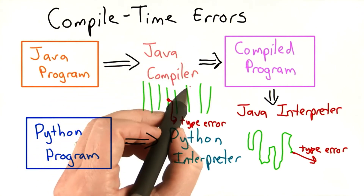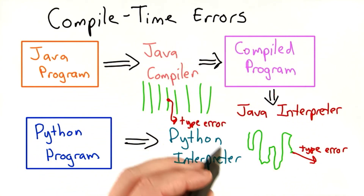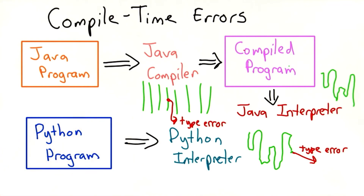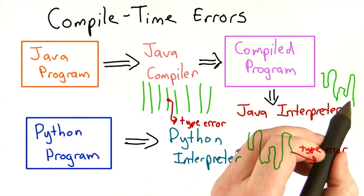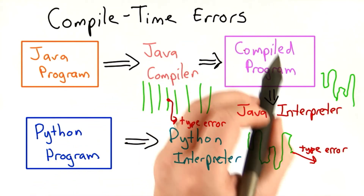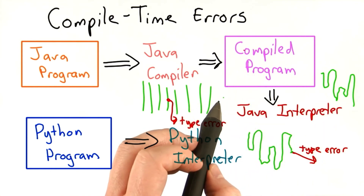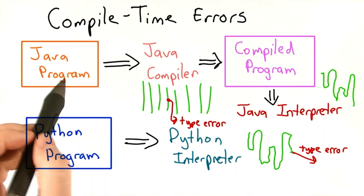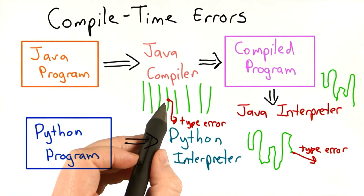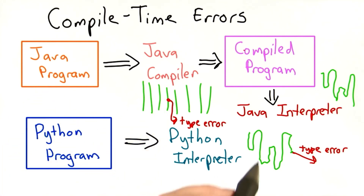If there aren't any type errors and the program's okay, the compiler outputs a compiled program, which is then input into the Java interpreter, and that's what runs the code. At the point where the code's running, we know there are no type errors in it, because the compiler would have caught them and stopped the program from even producing a compiled program in the first place. So with a statically typed language like Java, we're getting errors before we even run the program. With a dynamically typed language like Python, we're getting our errors later — not until we encounter that part of the program in an execution.